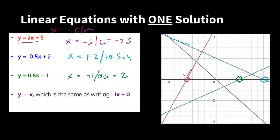The last function is y equals minus x, which is the same as minus 1x plus 0. So m equals minus 1 and c equals 0. The solution is x equals minus 0 divided by minus 1. Zero divided by anything equals 0, and indeed we see the solution at 0. The general solution formula works.